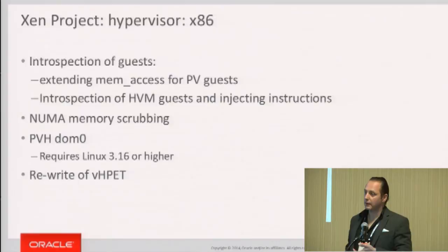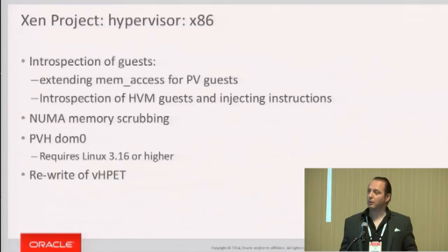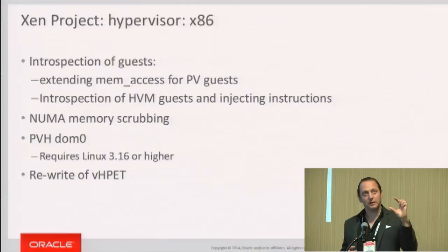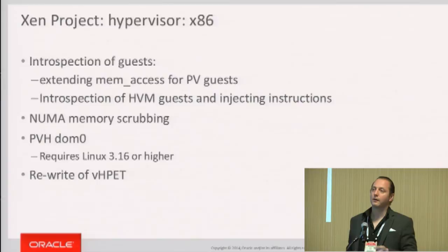We were talking about PVH. One of the things we want for Xen 4.5 is to be able to boot a Linux Dom0 in PVH mode instead of PV. For those who don't know the distinction between PV and PVH: it means less and faster — it's leaner, better Linux. We also want to make the virtual HPET much better and less buggy.